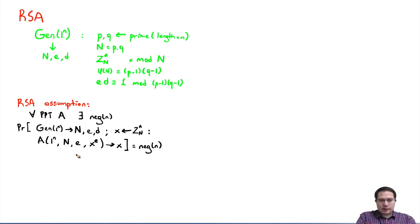The RSA assumption states that for all probabilistic polynomial time adversaries, this probability is negligible. Now using this assumption, we are going to create an RSA-based encryption scheme. Let's call this scheme pi.